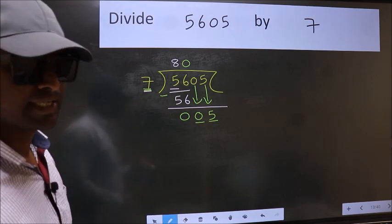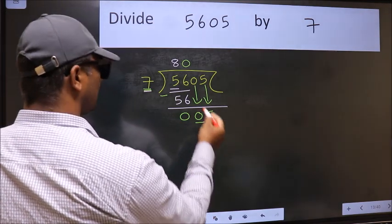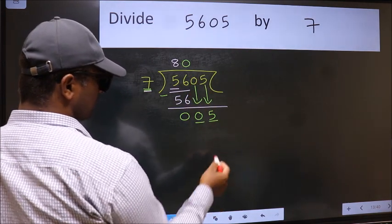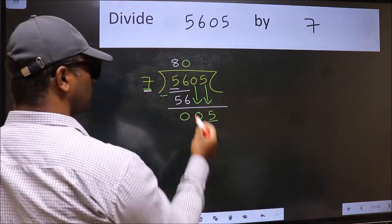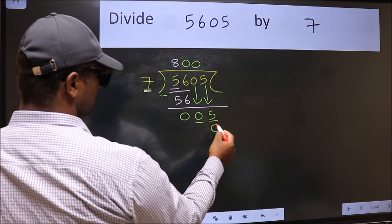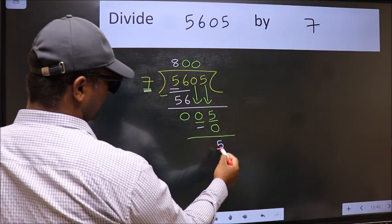Instead, what you should be thinking is which number should we take here. If I take 1, we will get 7. But 7 is larger than 5. So what we should do is we should take 0. So 7 into 0 is 0. Now we should subtract. We get 5.